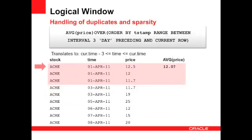So how do we manage data that is sparse or contains duplicates? The first point to note is that we've changed the syntax of our OVER clause. The ordering is still the same using the timestamp column, but the shape of the window has changed so that we're now building a window based not on rows, but on an interval of three days.